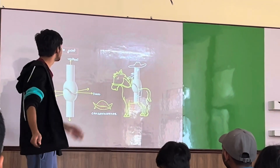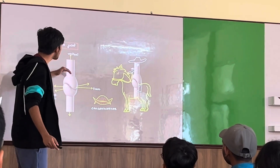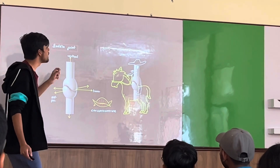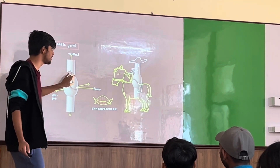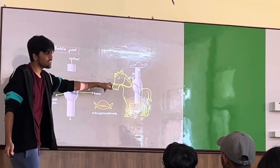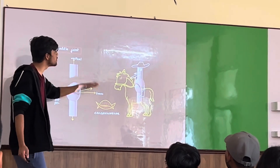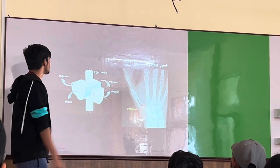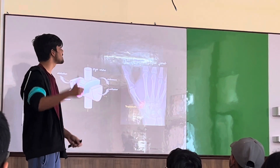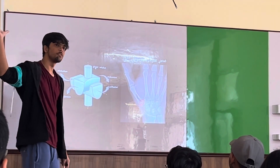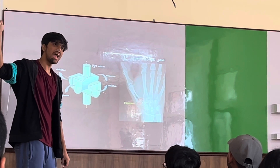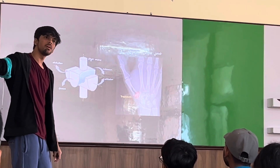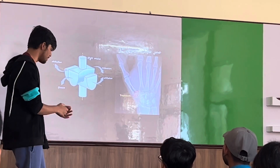Next, saddle joint. Here, two concave-convex structures articulate on one another and allow almost all movements. The lower part looks like a saddle on a horse, while the upper part looks like the weight of a horseman riding it. For example, your carpometacarpal joint — there is flexion, extension, adduction, abduction, circumduction, and a slight bit of rotation.